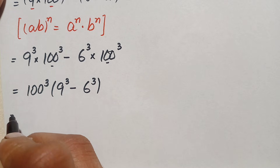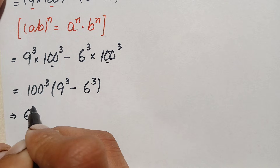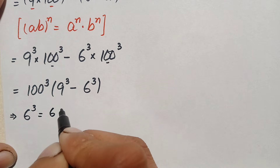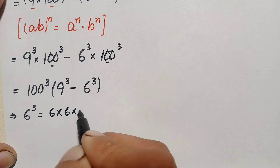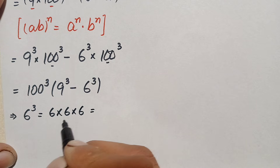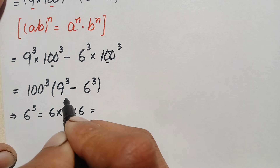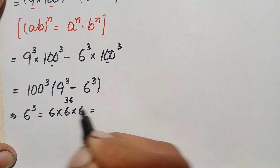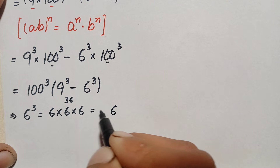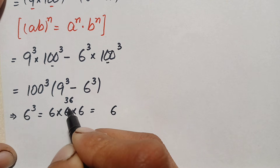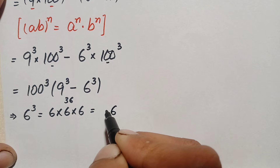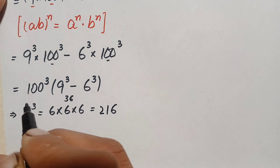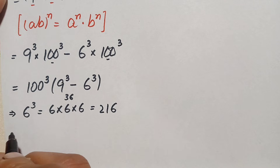First we find 6 cubed. So 6 cubed is 6 times 6 times 6. Now 6 times 6 is 36, and 36 times 6: 6 times 6 is 36, carry 3; 6 times 3 is 18, plus 3 is 21. So 6 cubed equals 216.